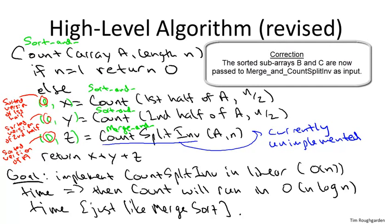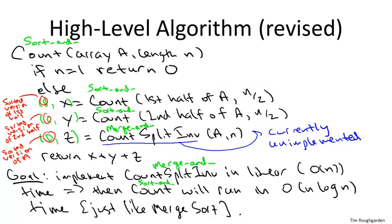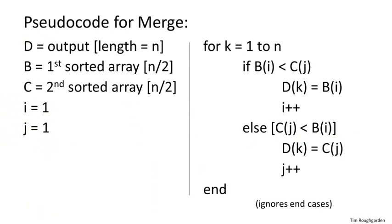We shouldn't be intimidated by asking our combining subroutine to merge the two sorted subarrays B and C, because we already know how to do that in linear time. The question is just: piggybacking on that work, can we also count the number of split inversions in an additional linear time? We'll see that we can, although that's certainly not obvious. The hope is that the payoff is that counting split inversions becomes easier by asking our recursive calls to do this additional work of sorting. To develop some intuition for why merging naturally uncovers the number of split inversions, let's recall what the definition of the original merge subroutine for merge sort was.